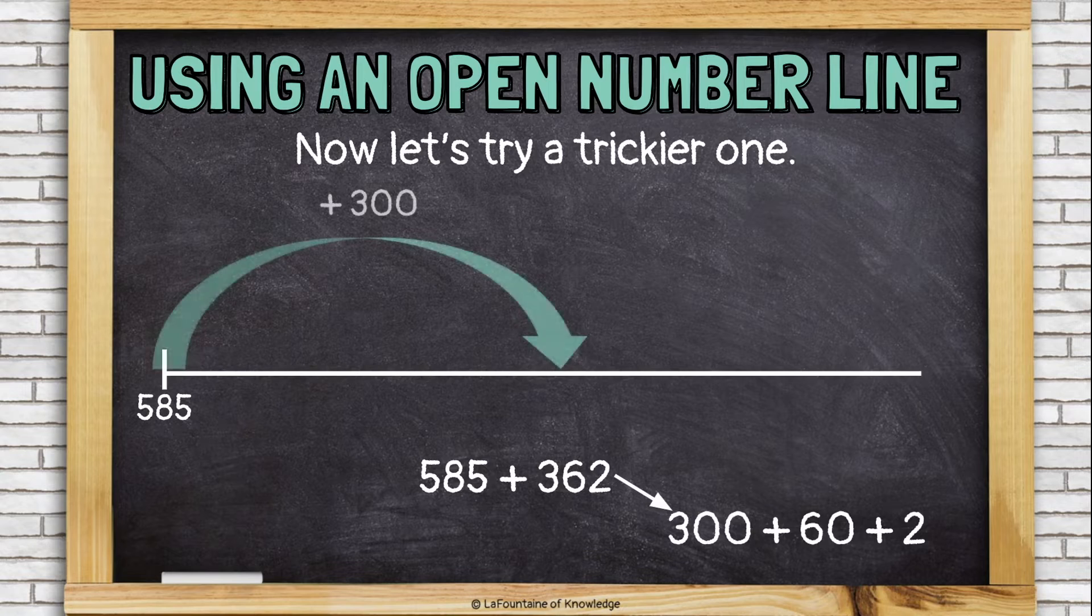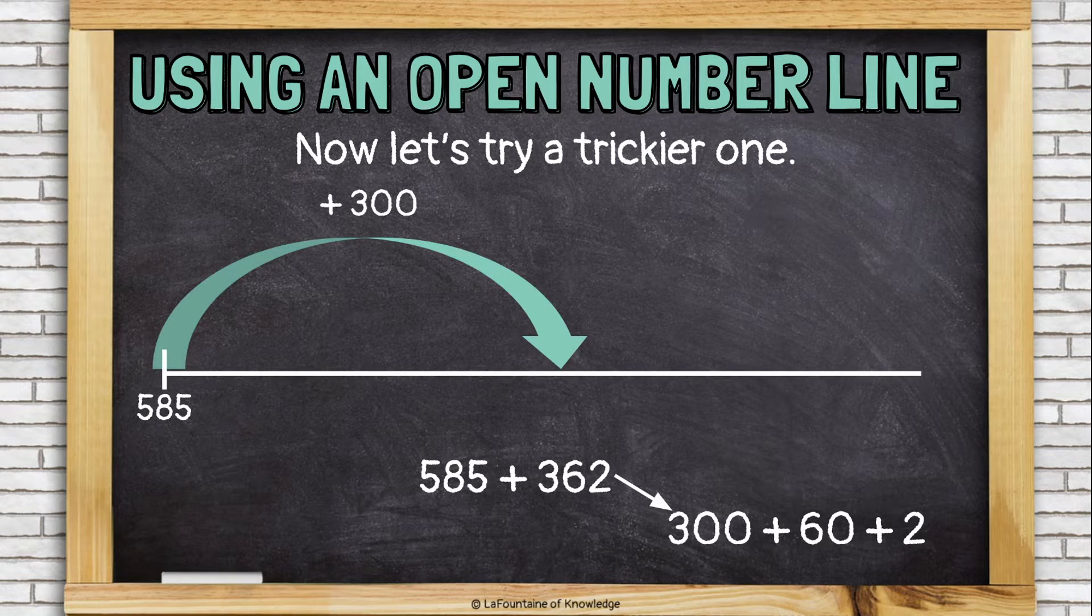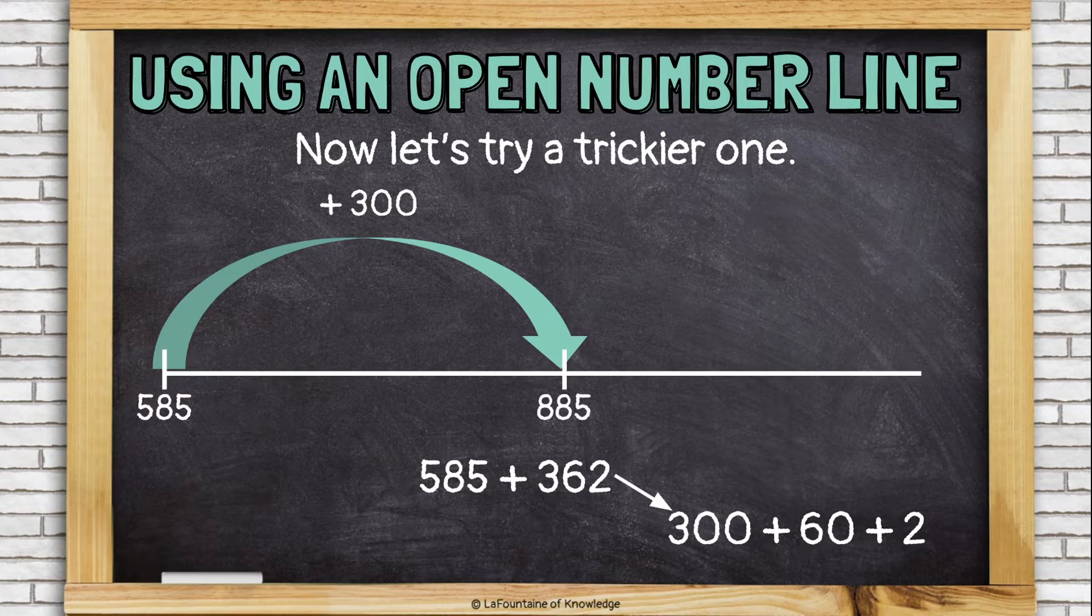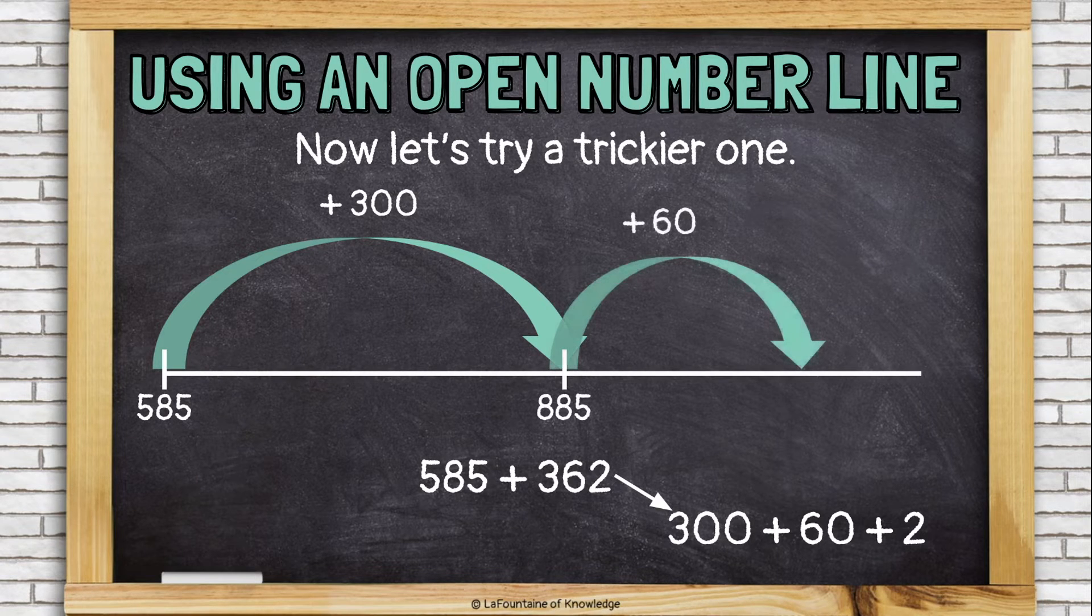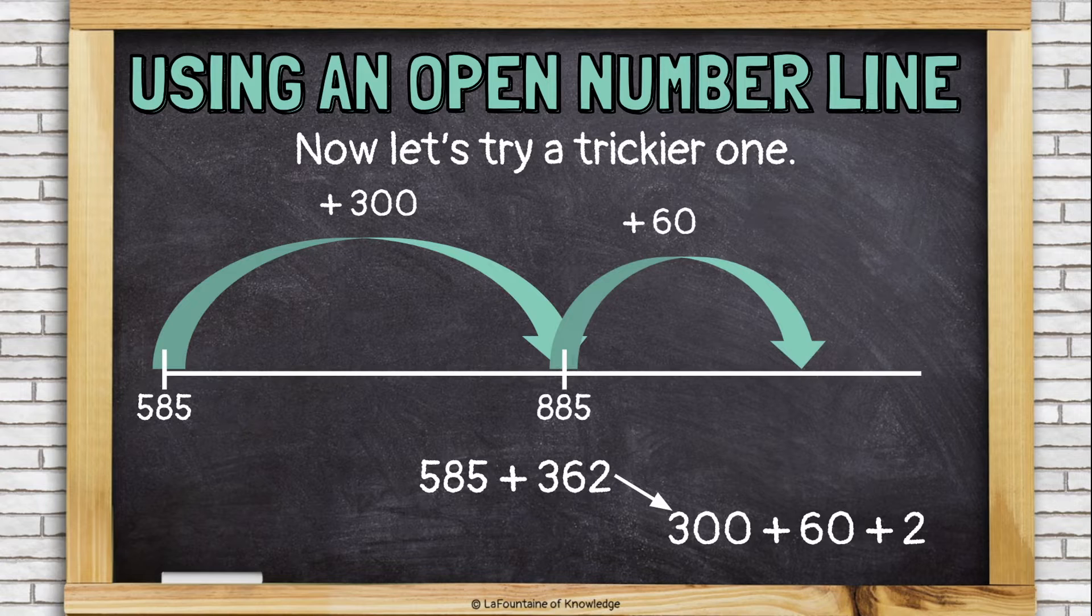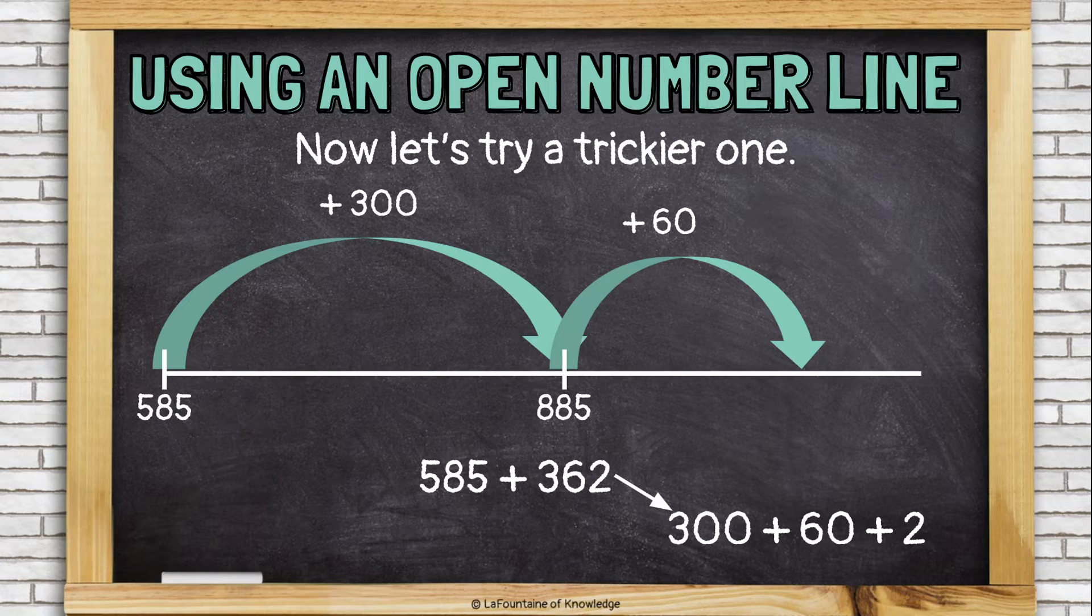We'll start by adding 300. 585 plus 300 is 885. Now we'll add 60. 885 plus 60 is not actually very easy to do in my head.